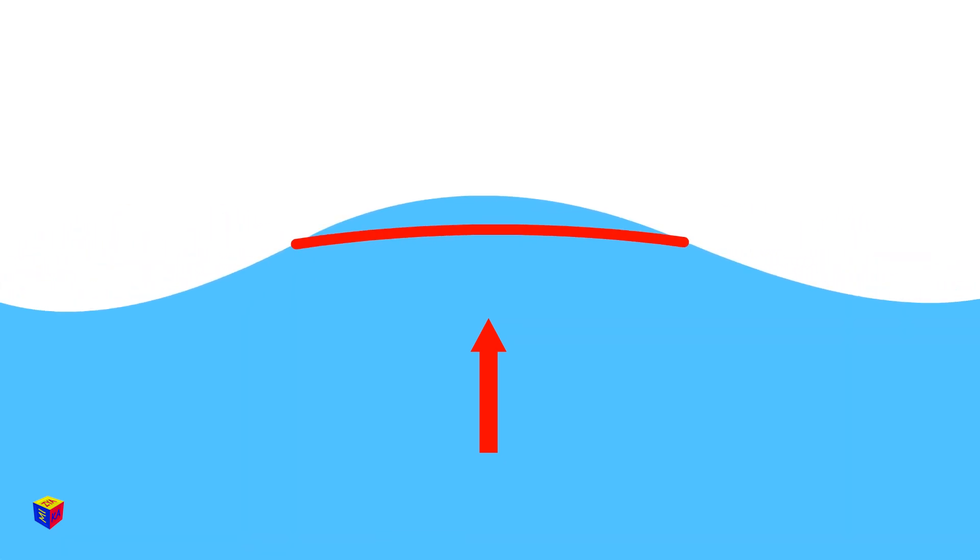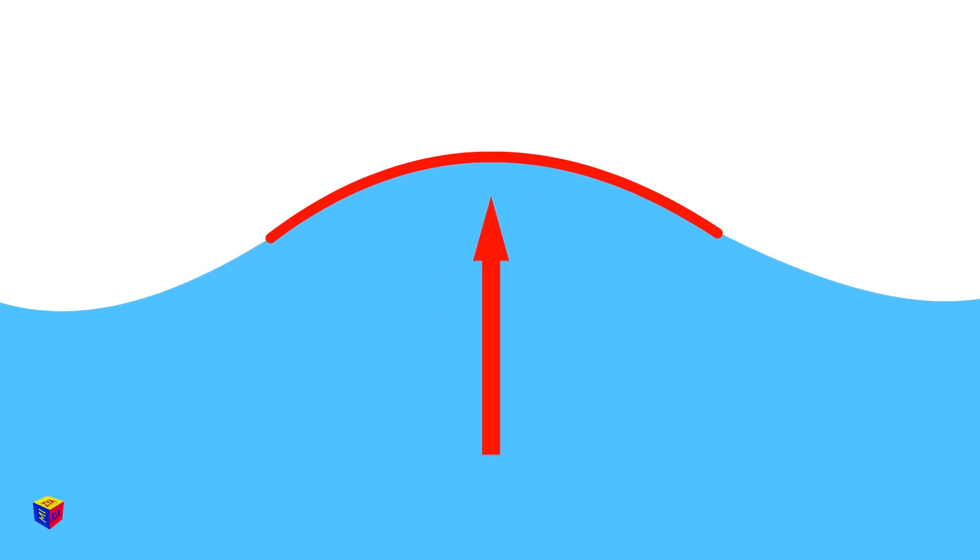The surface of the water then returns to its original level and the wave spreads further. At the very spot where the stone fell, the water is not just returning to its original level, but it is also rising higher. Then it goes down again, and so it continues for a while with a decrease in the amplitude until the surface of the water stops.